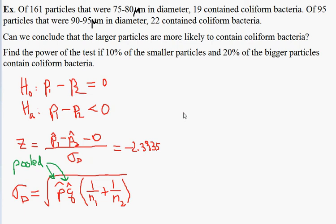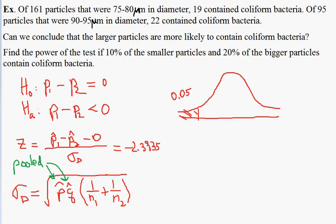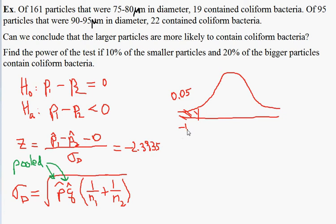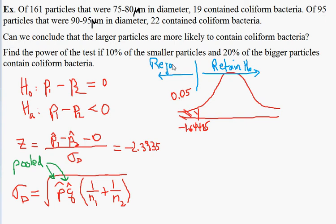At this point there are two possibilities to proceed. The first is by looking at the critical value. The critical value in this case is left-tailed, so I need the value under the bell curve such that 5% — our default value of alpha — lies to the left. Using Excel, z-critical equals normsinv of 0.05, which is negative 1.64485. Our value of negative 2.3935 falls in the rejection region, so my decision is to reject the null hypothesis.